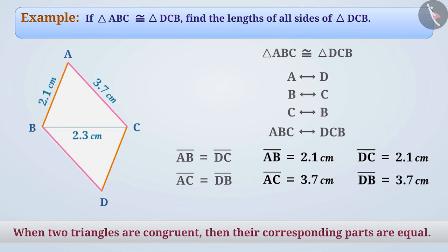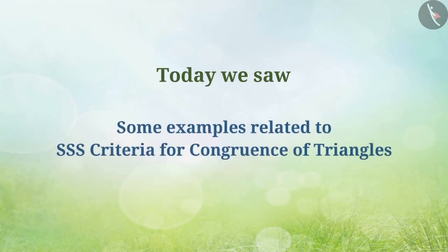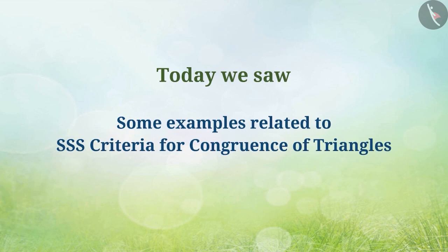With this, we have found the lengths of all sides of triangle DCB. Today, we saw examples related to SSS criteria for congruence of triangles. In the next video, we will see some misconceptions related to it.